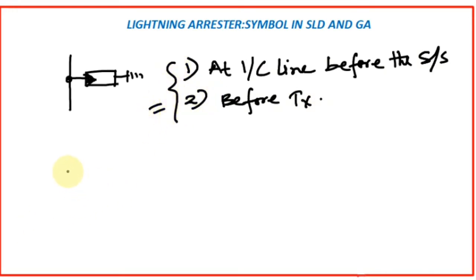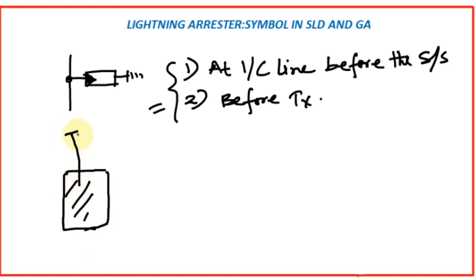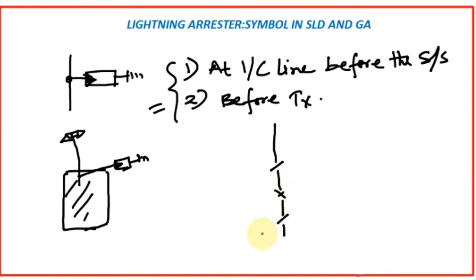So suppose this is your substation — here I am making a conceptual drawing. You are receiving a transmission line from a transmission tower. So here you have to put the lightning arrestor. The transmission line comes in, passes through an isolator, a circuit breaker, another isolator, and connects to a bus with a current transformer. So the lightning arrestor will be connected at this junction.